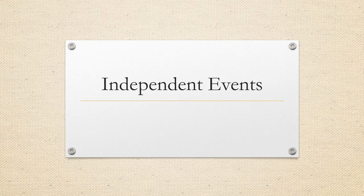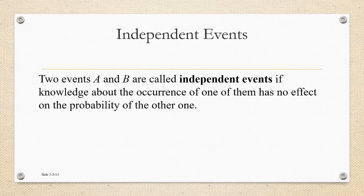Hi, I'm Ms. Hearn. Let's get started. In this video, we're going to talk about a concept of probability called independent events. Two events A and B are called independent events if knowledge about the occurrence of one of them has no effect on the probability of the other one.